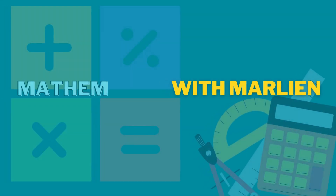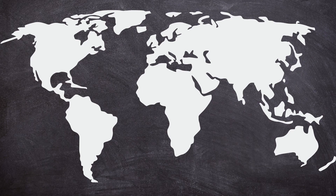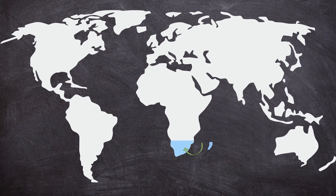Hello everyone and welcome to Mathematics with Marlene. In this video we'll be rounding off decimal numbers. All around the world we use two different decimal separators: the decimal comma and the decimal point. Because I was born and raised in South Africa I use the decimal comma, but that doesn't change any other rules. At the end of this video I include two different worksheets — one using a decimal comma and one using a decimal point — but for this video I'll just use a decimal comma.